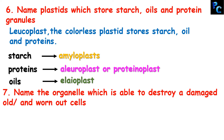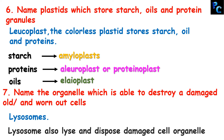Name the organelle which is able to destroy damaged, old, and worn-out cells. It's lysosome — it bursts out and destroys the damaged cell, that's why it is called suicide bag. Lysosomes also lyse and dispose of damaged cell organelles.